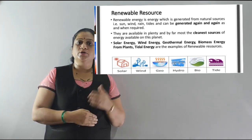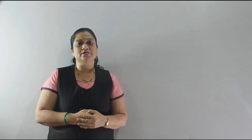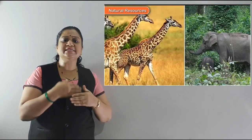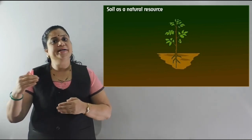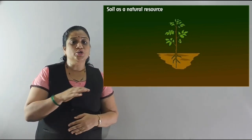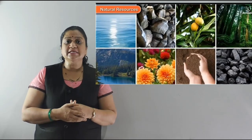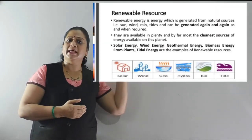Let us first talk about living resources. Living resources are the resources which can regenerate if the conditions are favorable. For example, crops, wildlife, and forests — all these things can regenerate if conditions are favorable. So they are inexhaustible resources. Biotic means resources which have life in them; they can regenerate after a period of time, and so they are called renewable resources.